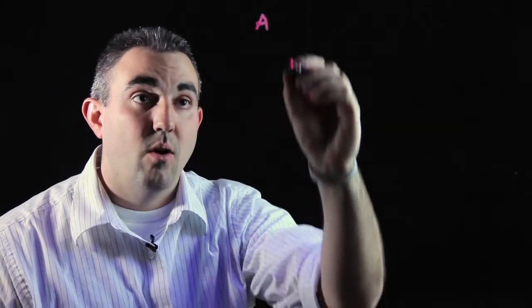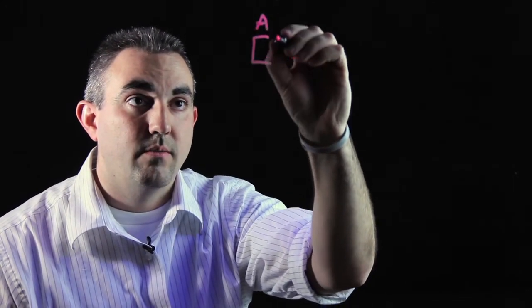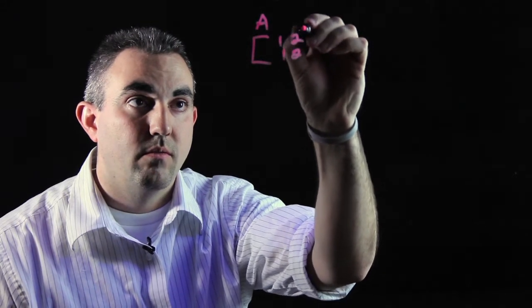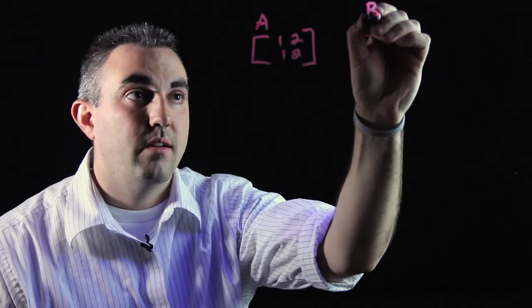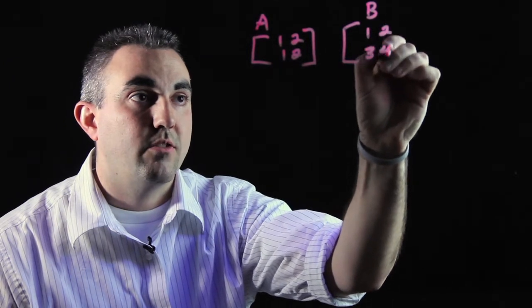I'm going to give you two basic matrices, a 2 by 2 matrix for A and a 2 by 2 matrix for B. So we're going to call matrix A a 1, 2, 1, 2 matrix. We're going to call matrix B a 1, 2, 3, 4 matrix.